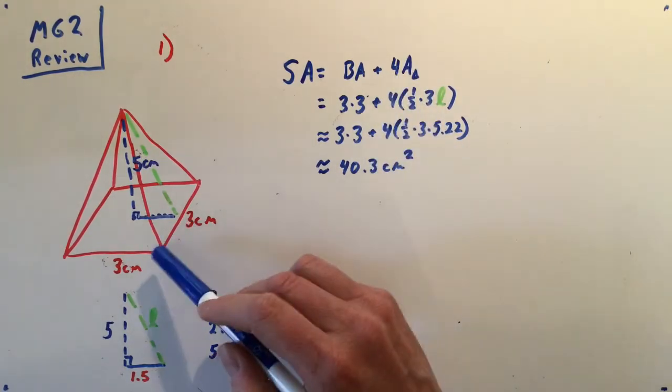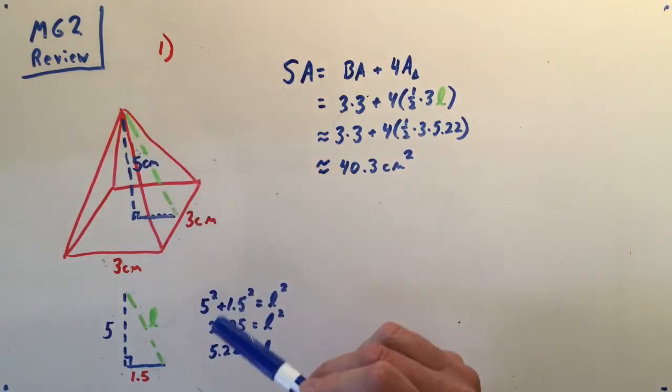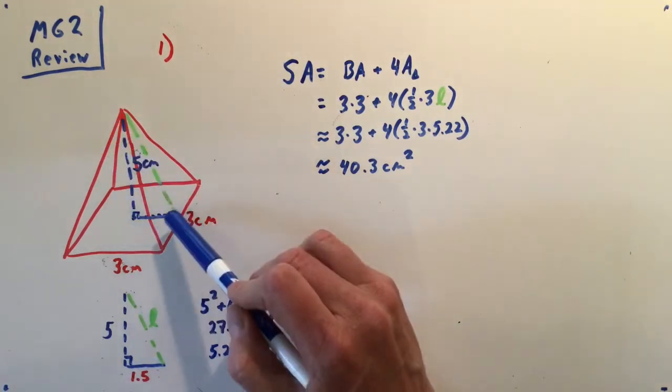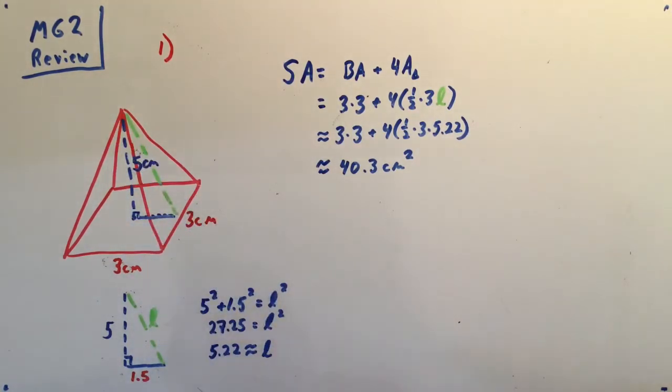Four times the area of the triangle. In order to find this triangle I'll need this green segment right here, the height of that triangle, which is the slant height of the pyramid.